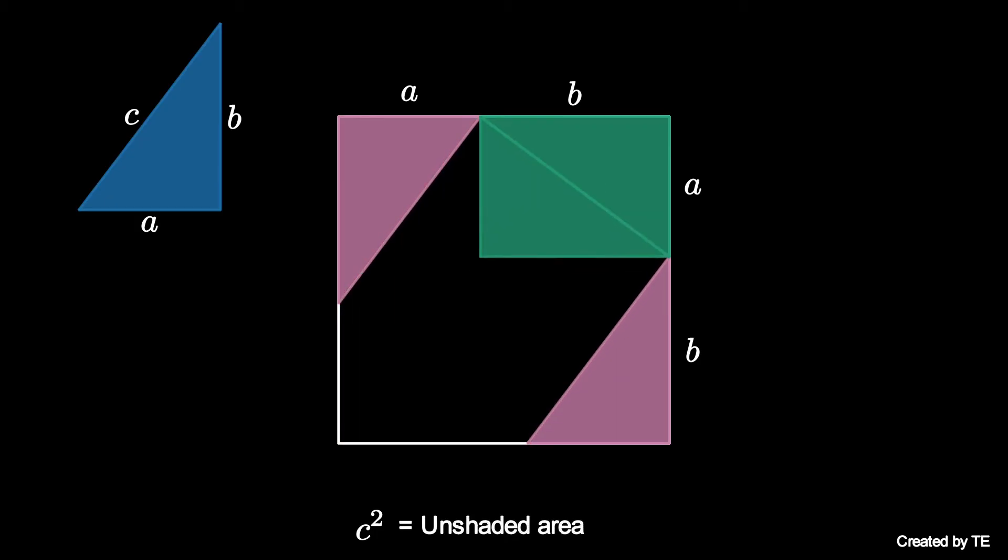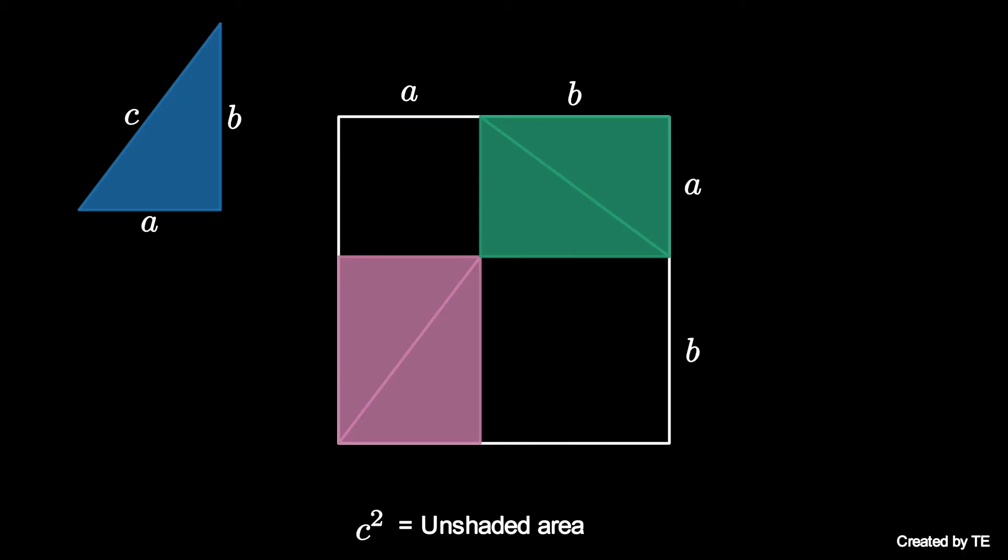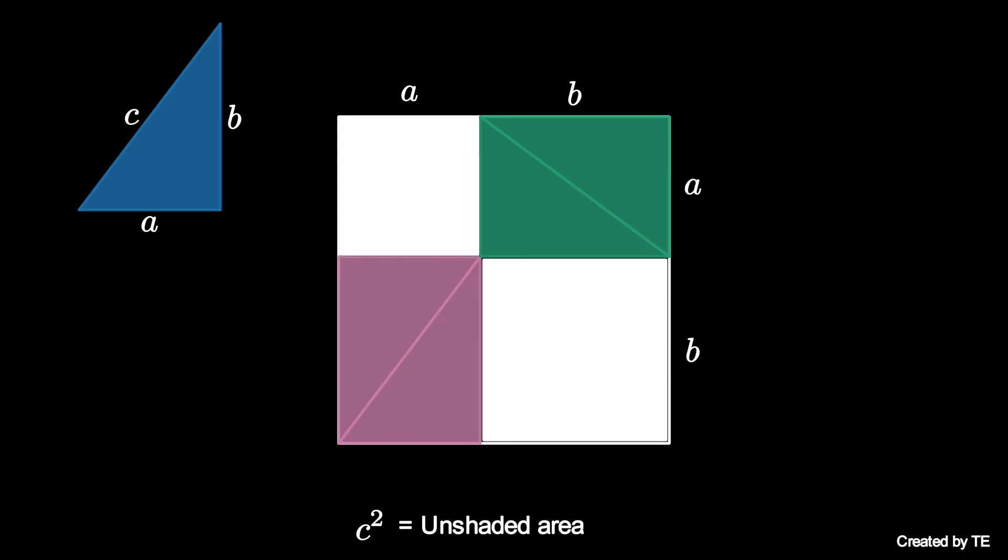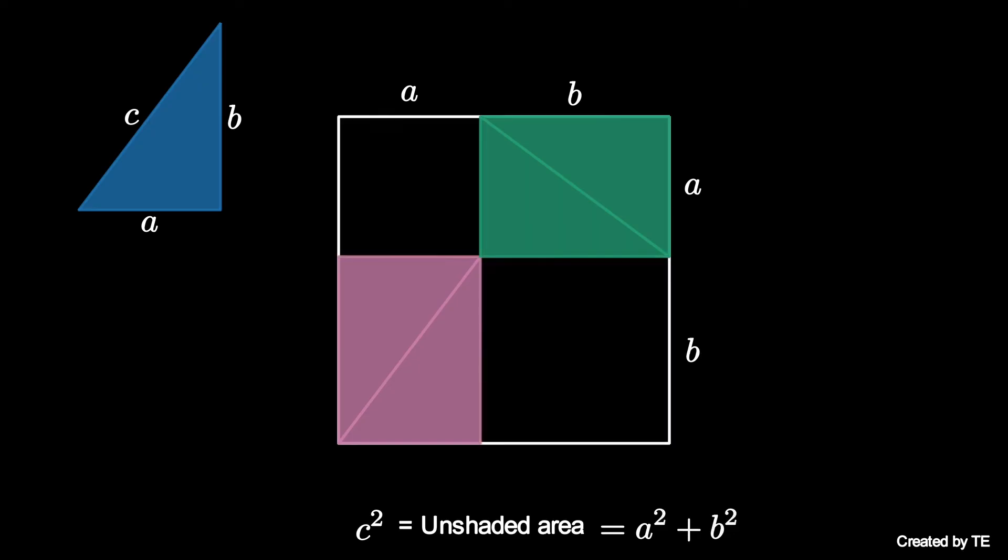We can also move the same colored triangles together to form two different a by b rectangles. Now the unshaded area is given by an a by a square and a b by b square, so that the unshaded area is a squared plus b squared.